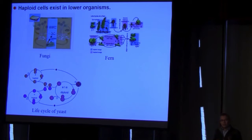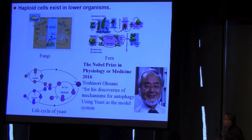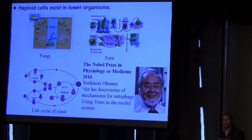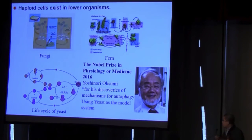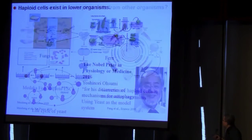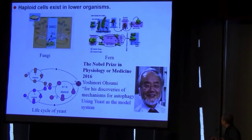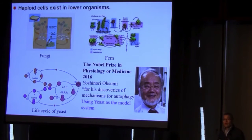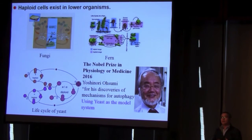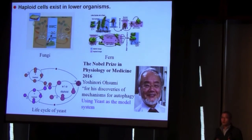Actually, haploid cells exist in very low organisms, such as fungi and fern. As all of you know, yeast is a kind of fungi that has been largely used in many labs. As an example, the Nobel Prize this year has been awarded to Dr. Ohsumi for his discovery of the mechanism of autophagy — he used yeast as the model system for his studies.